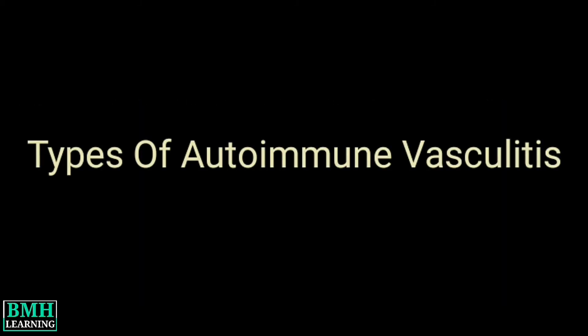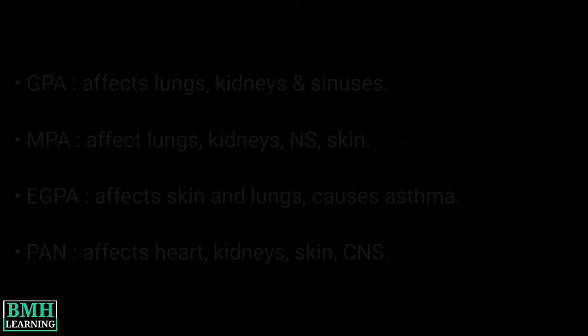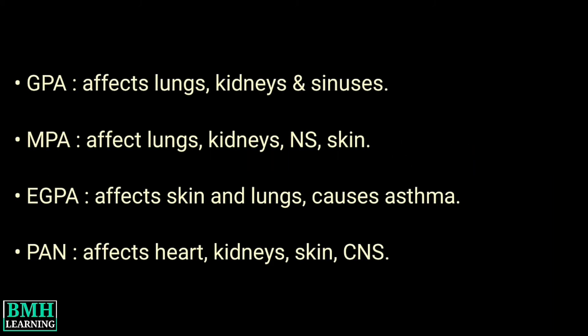Types of autoimmune vasculitis include granulomatosis with polyangiitis, which most often affects the lungs, kidneys, and sinuses.